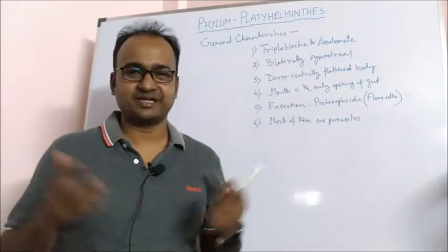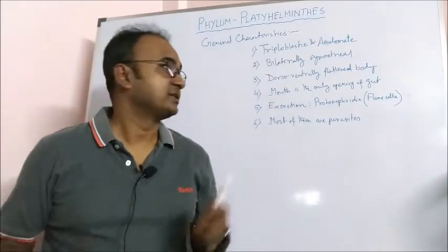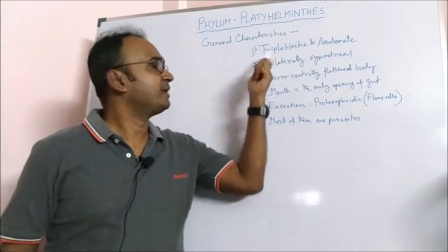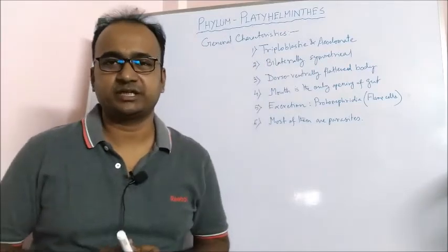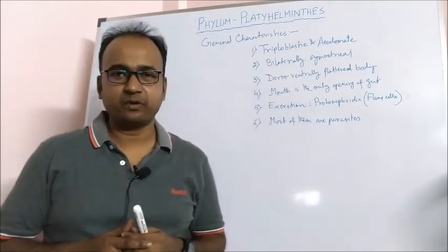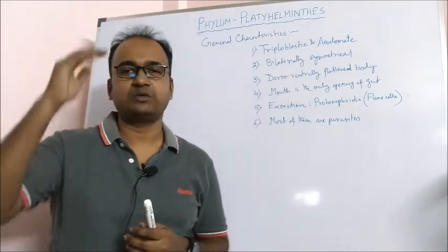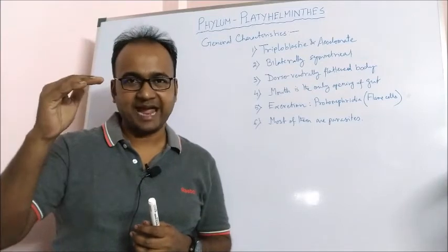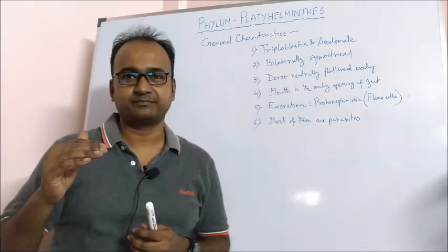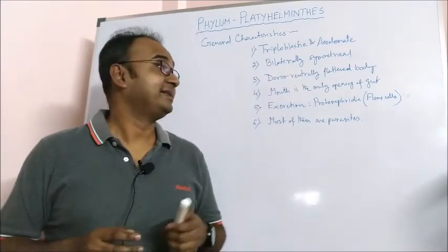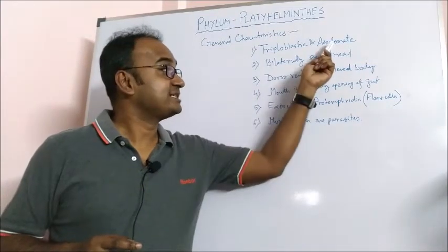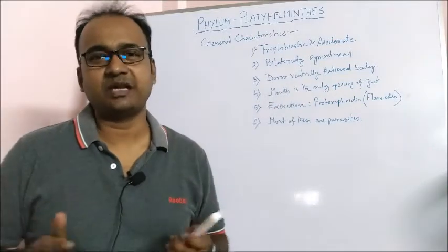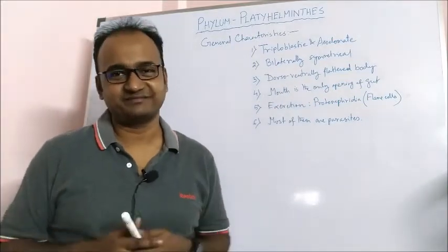Let's start with the general characteristics. The first character: they are triploblastic in nature, meaning they have three body layers — outer ectoderm, mesoderm, and inner endoderm. And they are acoelomate, which means they do not have any coelom or body cavity.